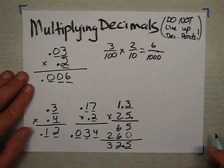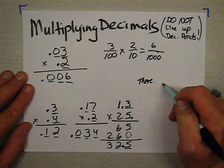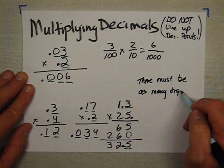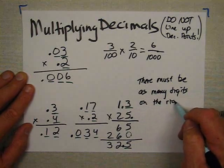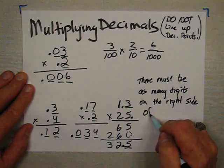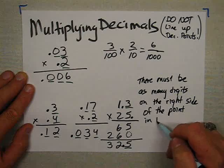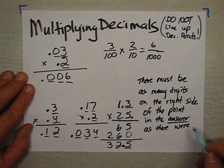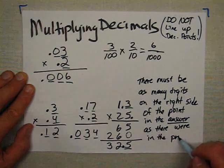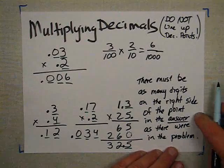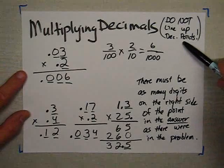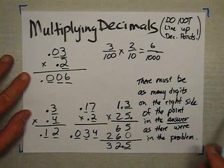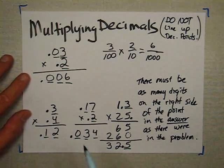How do you figure out where the decimal point goes in the answer? Here's the rule: there must be as many digits on the right side of the point in the answer as there were in the problem. Do not line up the decimal points — just multiply like usual and count how many digits are on the right side of the point in the problem. There must be that many digits on the right side of the point in the answer.